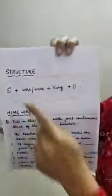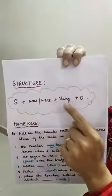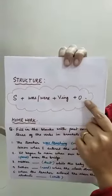Now let's see the structure of this tense. The structure is: subject + was/were + verb + ing + object. Remember that whenever we are talking about continuous tense — be it present, past, or future — you have to always add 'ing' to the base form of the verb. And since this is past tense, we have to add 'was' or 'were' depending upon the subject. If the subject is singular, we add 'was'; if the subject is plural, we add 'were'.